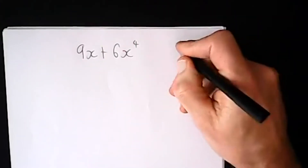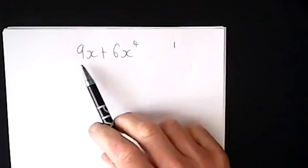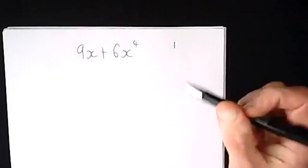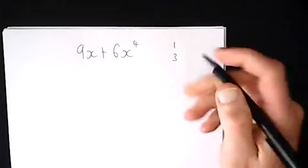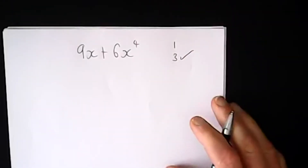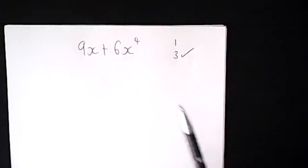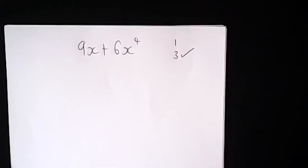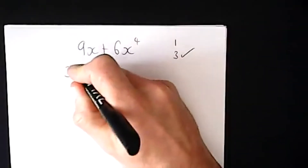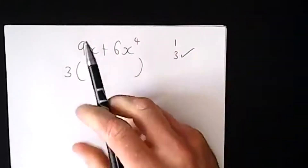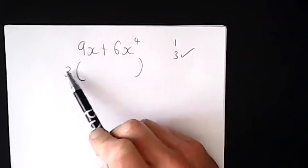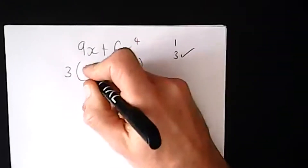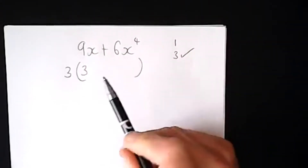Looking at the two numbers — the 9 and the 6 — we need numbers that divide both 9 and 6. One will divide both, 2 will divide 6 but not 9, 3 will. So it's definitely 3. Remember to fully factorize you've got to get the highest number that divides both — you'll lose a mark if you don't find the highest. So 3 goes on the outside of the brackets. What do I multiply 3 by to make 9? Three 3s are 9.